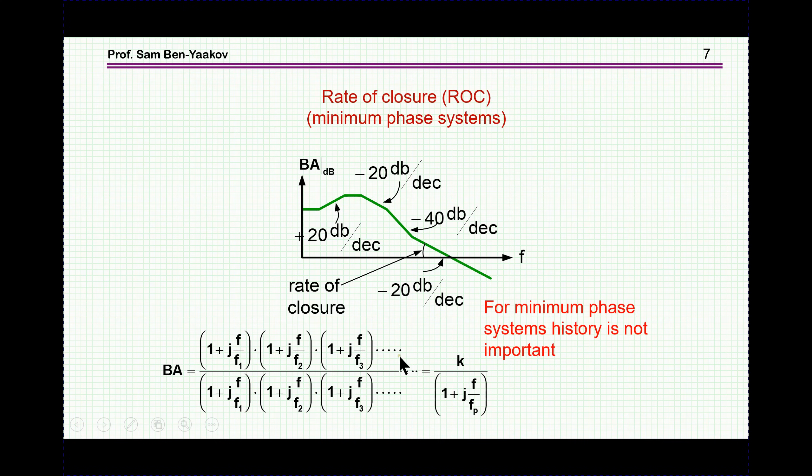So, if you reached a slope of minus 20 dB, it corresponds to a single pole without having to worry about the history here, and therefore, the phase shift here is minus 90 degrees, and therefore, the phase margin is 90 degrees. So, by looking at the rate of closure, that is, the way this curve is actually closing up this 0 dB, you can tell immediately whether the system is stable or not in a minimum phase system, and this is, of course, can be used very nicely in the design stage.